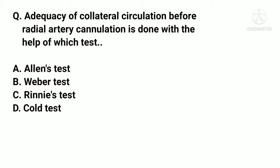Adequacy of collateral circulation before radial artery cannulation is assessed with which test? Options: A. Allen's test, B. Weber test, C. Rinne's test, D. Cold test. The correct answer is A. Allen's test.